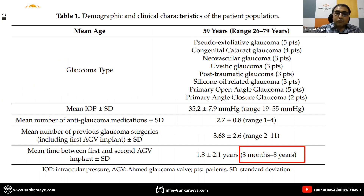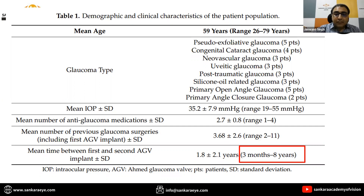The mean intraocular pressure was 35 mmHg, mean number of anti-glaucoma medications was approximately 3, and mean number of previous glaucoma surgeries was approximately 4. Even after multiple interventions, the second AGV was required as early as 3 months and as late as 8 years after the primary implant.